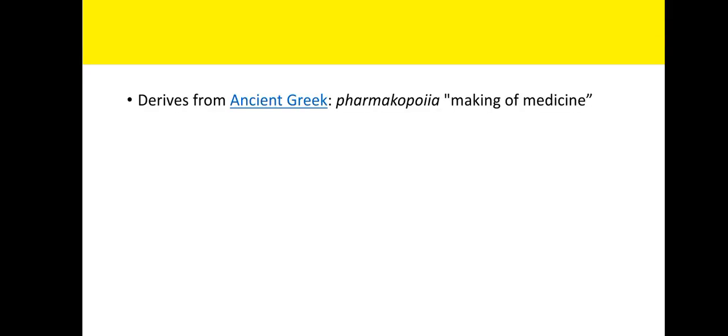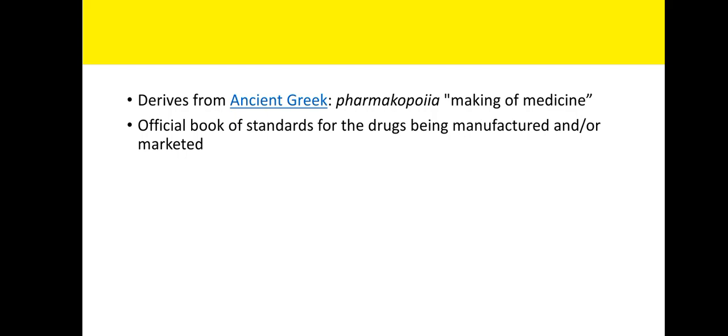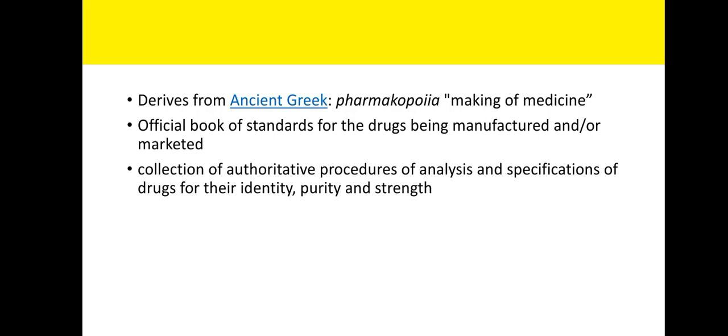Pharmacopoeia — as we know, the majority of our medical terms are derived from the Greek language. In Greek, pharmacopoeia means 'making of medicine.' It is a very important official book, prepared by the regulatory body of a particular country. Its purpose is to define the standards for manufacturing as well as for marketing. It is a collection of authoritative procedures, because manufacturing and ultimately dispensing of the drug is a very complex and multi-step process.